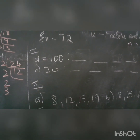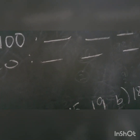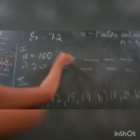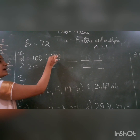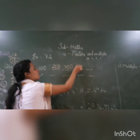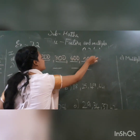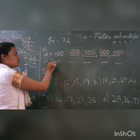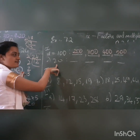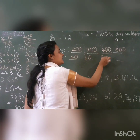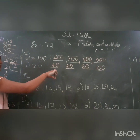Now we go for exercise 7.2. The first question is: find the 4 multiples of the following numbers. What are multiples? You multiply any number with the given number and write the answers. For example, 100 × 2 = 200, 100 × 3 = 300, 100 × 4 = 400, 100 × 5 = 500. For 20: 20 × 2 = 40, × 3 = 60, × 4 = 80, × 5 = 100. We need only 4 multiples.